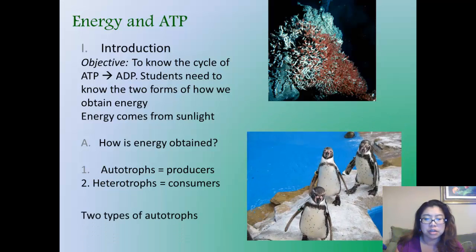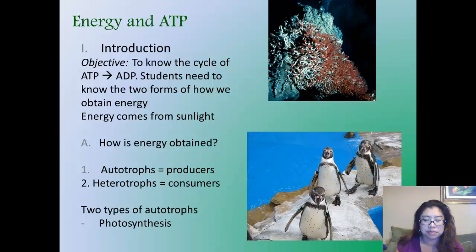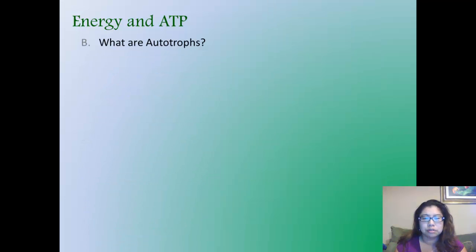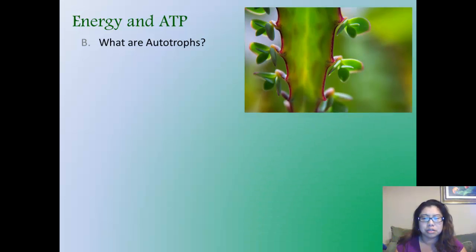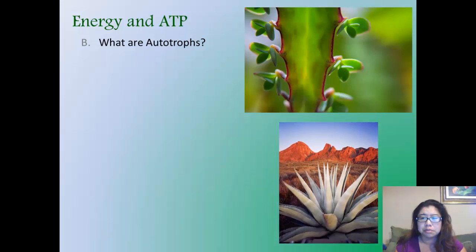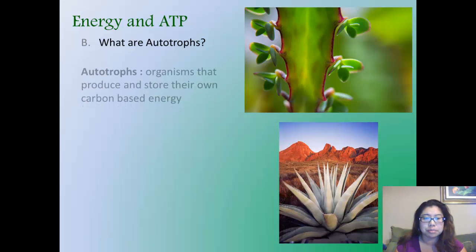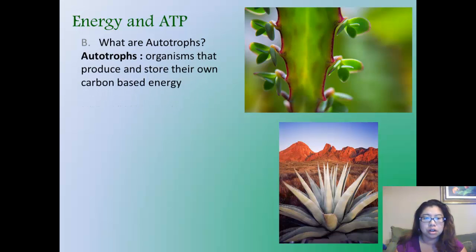So there are two types of autotrophs. They get their energy through the process of photosynthesis and chemosynthesis. We look at the word auto in autotrophs. It means to go by itself. And here are some examples. We've got different kinds of plants. Autotrophs are organisms that produce and store their own carbon-based energy.